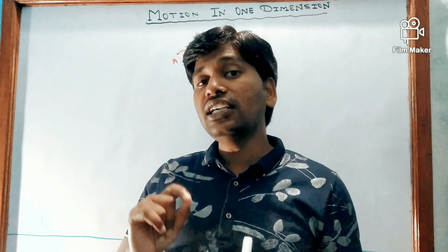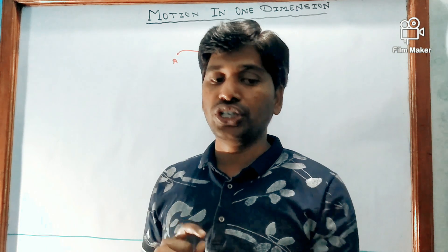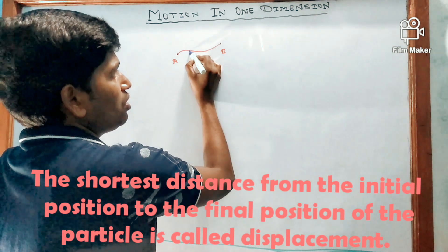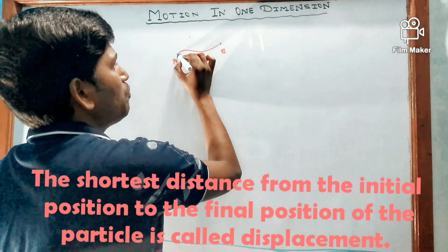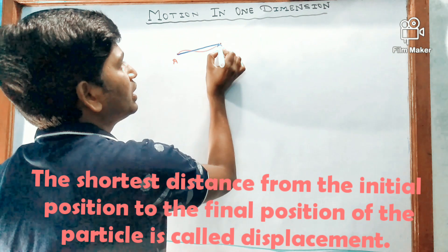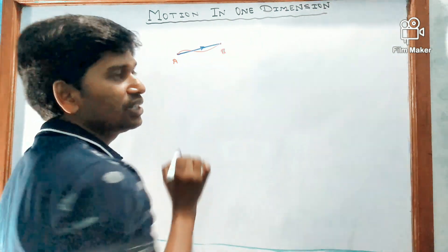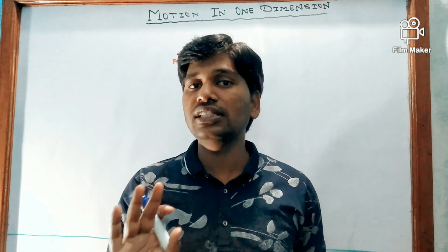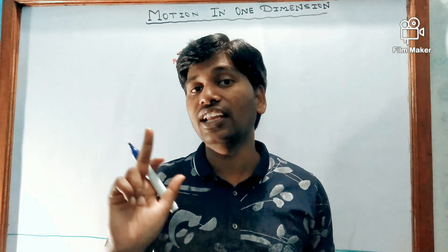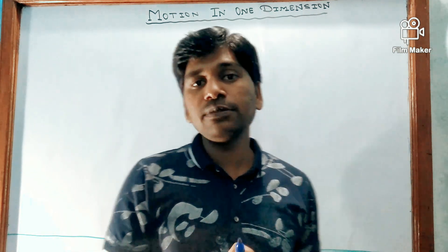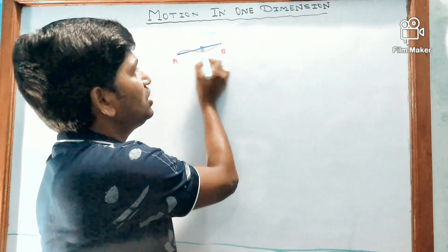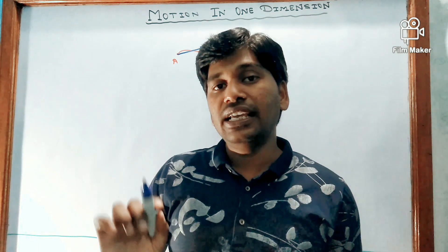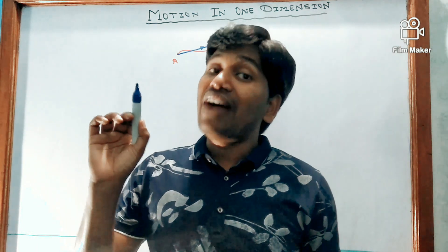Now the second point is displacement. Displacement is the shortest distance from the initial to the final position. If point A is the initial position and point B is the final position, the actual path length is the distance, while the direct shortest distance from A to B is called the displacement. Since displacement has a specific direction — from initial to final — it is a vector quantity.